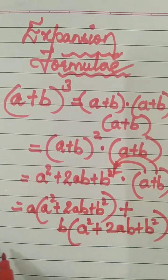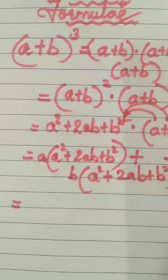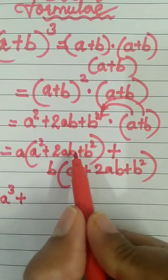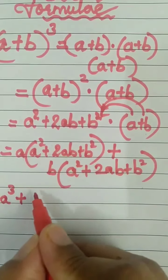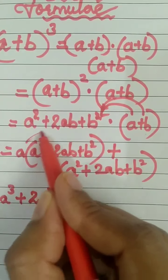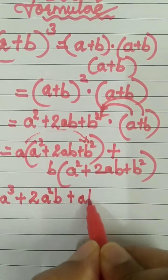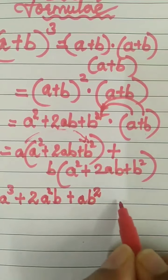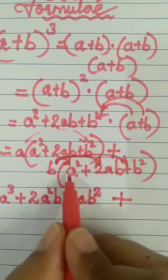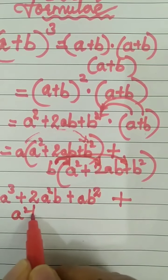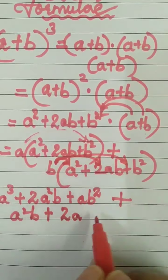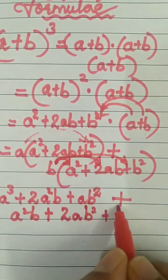When you open the bracket — see how long the process is — a into a² will be a³, 2ab into a will be 2a²b, a into b² will be ab². Then multiplying b: b into a² is a²b, b into 2ab is 2ab², b into b² is b³.